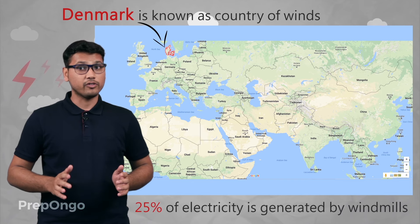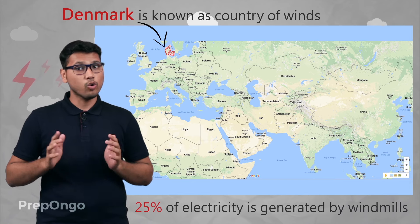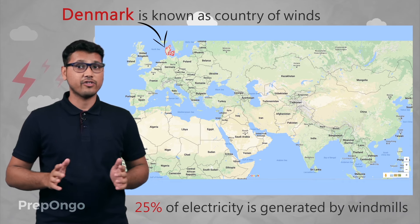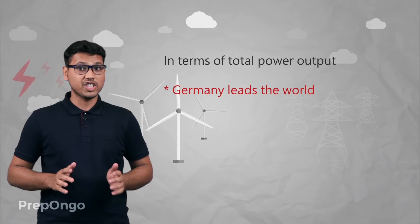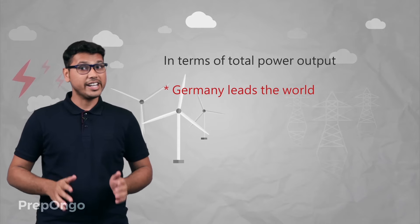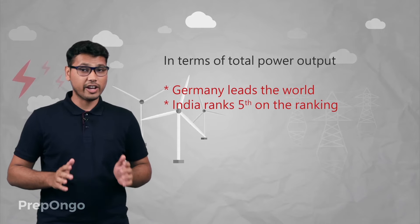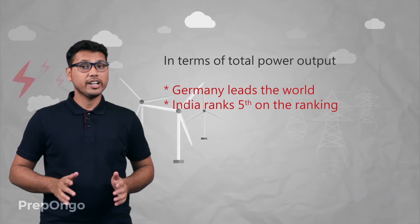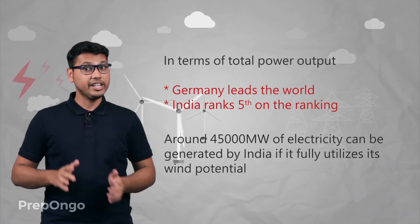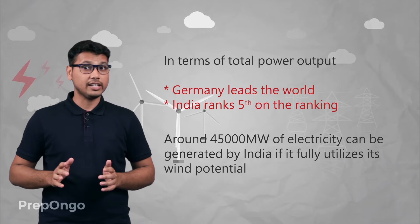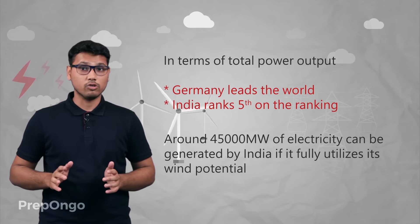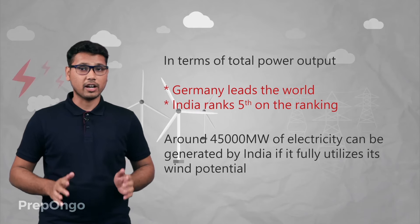Did you know that Denmark is known as the country of winds? More than 25 percent of the electricity needs of the whole country is generated by a vast network of windmills. In terms of power output, Germany leads the world, and India ranks fifth in total power generation by windmills.